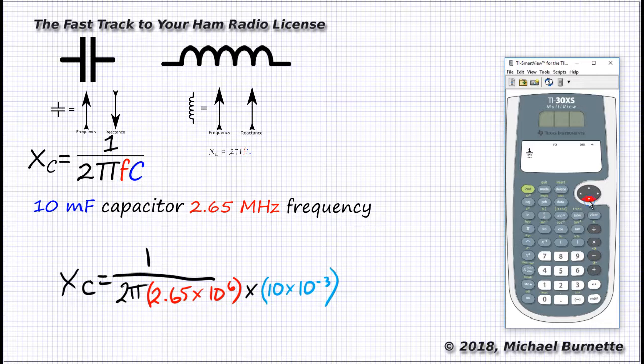We'll do the numerator over denominator key and a 1, and then toggle that cursor down with the cursor movement key, parenthesis, 2.65 times 10 to the nth, 6, jog it over 1, close the parentheses, times, parenthesis, 10, times 10 to the nth, use the negative key, a 3, jog it over 1, close that parenthesis, and hit enter.